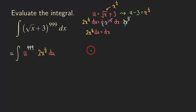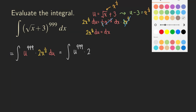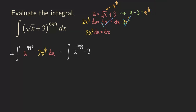Now we can make that substitution. The integral still has u to the 999 power, and the x to the one-half becomes u minus 3. So we have the integral of u to the 999 times 2 times (u minus 3) du. Now it's entirely in terms of u — just a product that we distribute.